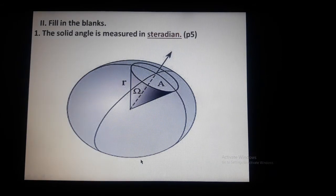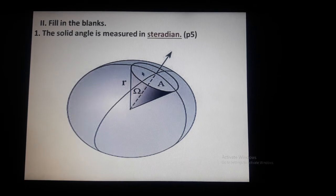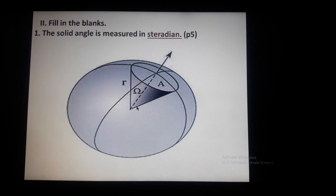Filling the blanks. First question: the solid angle is measured in steradian. The unit of solid angle is steradian. It is the angle at the top vertex of a cone — the angle between the two lines forming the cone. This is called steradian. So the unit of solid angle is steradian.